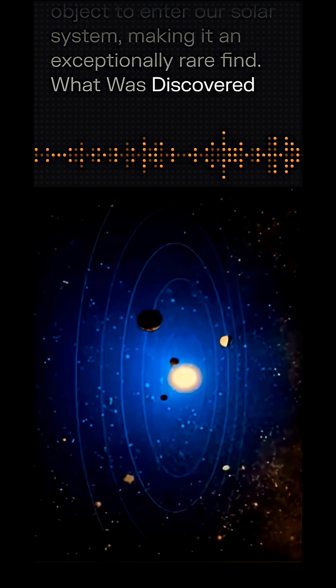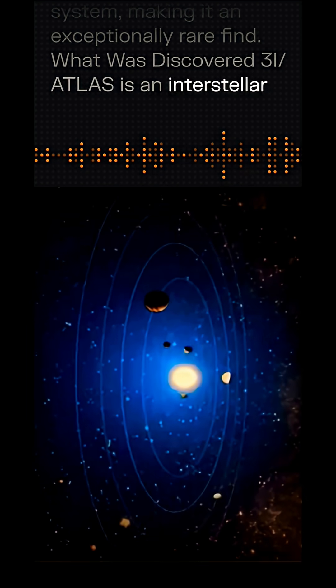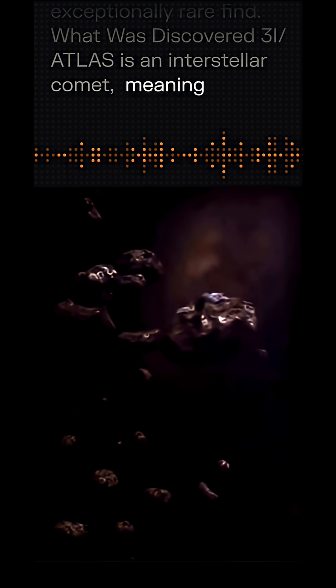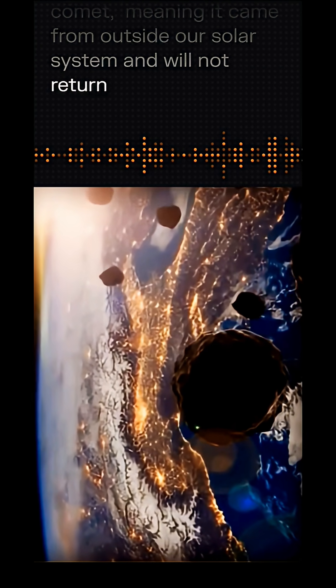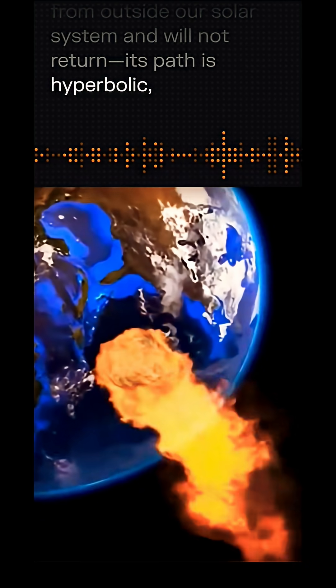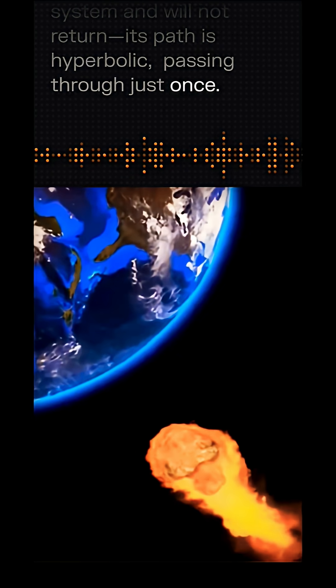What was discovered - 3I Atlas is an interstellar comet, meaning it came from outside our solar system and will not return. Its path is hyperbolic, passing through just once.